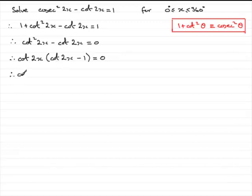So we've got either cot 2x equals 0 or cot 2x minus 1 equals 0. Now we can look at each of these equations in their own right. Let's start off with cot 2x equaling 0.